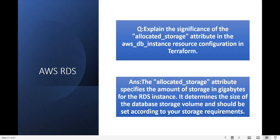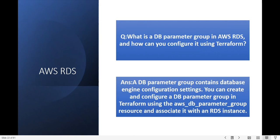Next question: what is a DB parameter group in AWS RDS and how can you configure it using Terraform? A DB parameter group contains database engine configuration settings. You can create and configure the DB parameter group in Terraform using the aws_db_parameter_group resource, and associate it with your RDS instance.